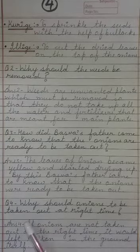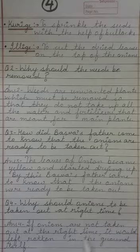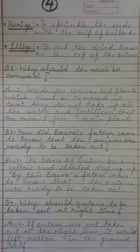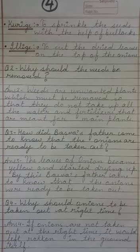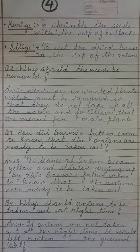Question 4: Why should onions be taken out at the right time? Onions ko sahi samay pe bahar nikalna kyun zaruri hai? Answer: If onions are not taken out at the right time, they would rot in the ground itself. Agar onion ko sahi samay pe bahar nahi nikala toh woh ground mein rotten ho jayenge. Isliye sahi time pe nikalna important hai.